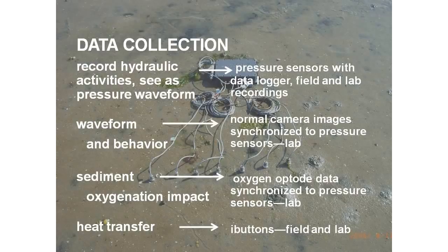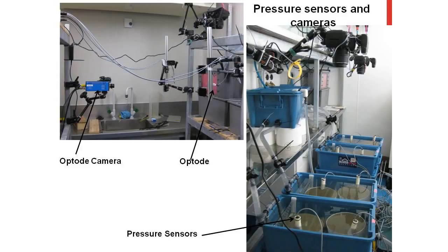That's what the laboratory looks like — quite a lot of stuff. These are the pressure sensors in the lab with captive animals, and a camera recording what's going on at the surface. Here's another set of organisms — this pink material is the oxygen-sensitive fluorescent material, being recorded on a camera that takes a whole series of images in a very short period of time with a sensitive lens.